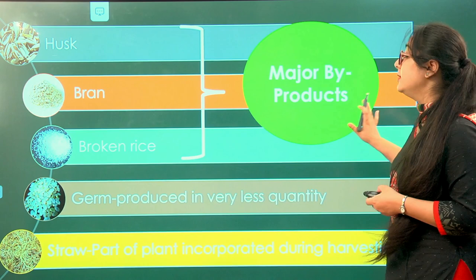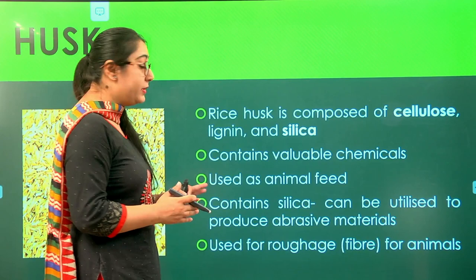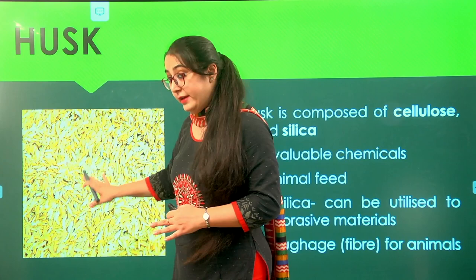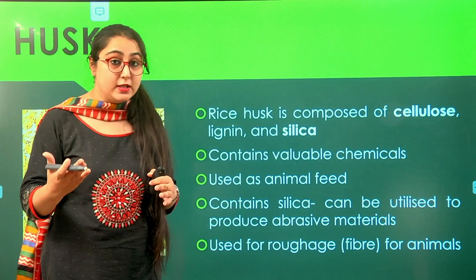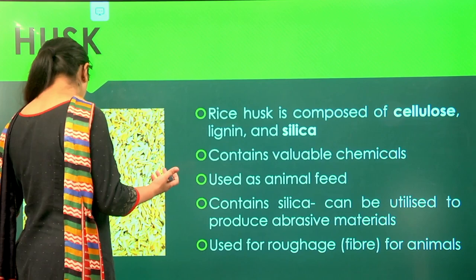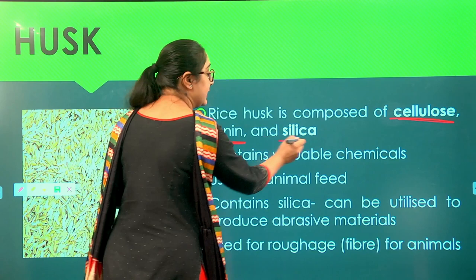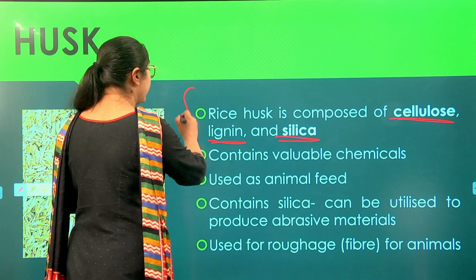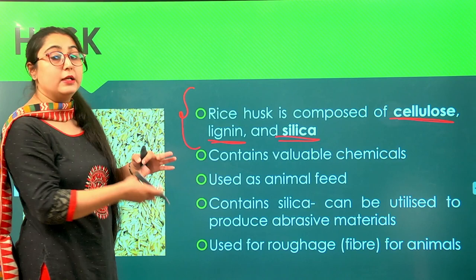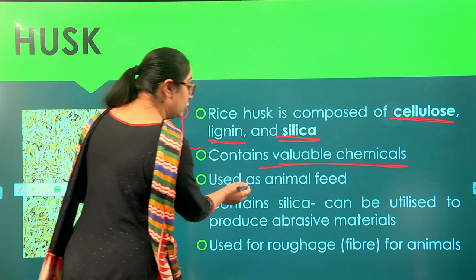The first by-product is husk, the outer covering of rice, comprising around 20% of the weight. Processing 100 kg of rice yields around 20 kg of husk. Husk consists of cellulose, lignin, and silica. Its uses revolve around this composition. It has very good use as animal feed — given to many animals as fodder. Because it contains silica, it is excellent as an abrasive material, providing desired friction and hardness, useful even in juice extraction and other abrasive applications.